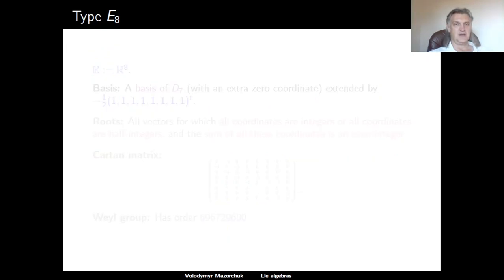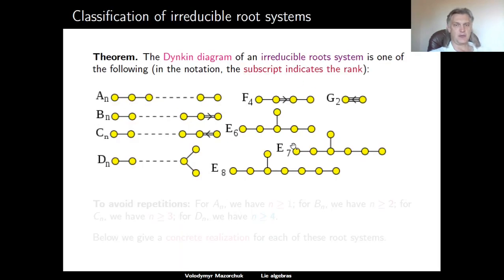It remains to construct the root systems of type E6, E7, and E8. Looking at the corresponding Dynkin diagrams, we see that the Dynkin diagrams of type E6 and E7 are sub-diagrams of the diagram of type E8. Therefore it is enough to construct the root system of type E8, and the root systems of type E6 and E7 will automatically be subsystems. To construct the root system of type E8, we use the connection with D7 — deleting one vertex of E8 leaves a root system of type D7. We will start with a root system of type D7 and extend it by one more coordinate to a root system of type E8.